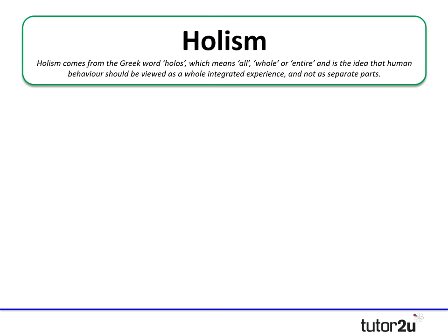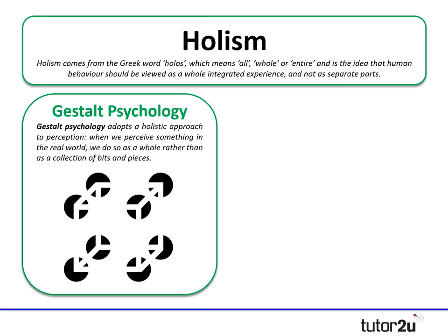A novel example: there was a movement of Gestalt psychology around 1910–1912, a group of German psychologists who took a holistic position on perception. They said that when we see something in the real world, we do so as a whole rather than as a collection of bits and pieces. Cognitive psychologists have also taken a slightly holistic approach to perception. If you think about visual illusions — like the one on screen — you instantly perceive the outline of a cube, yet there is no cube in the image. Your mind creates it from the position and configuration of the black shapes. That holistic interpretation was really the starting point of Gestalt psychology.